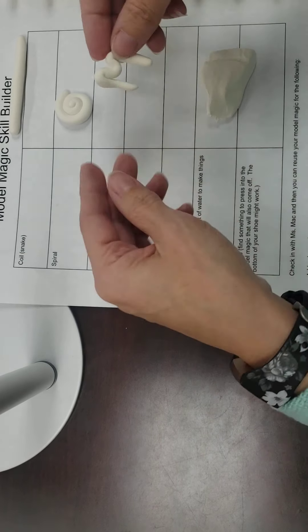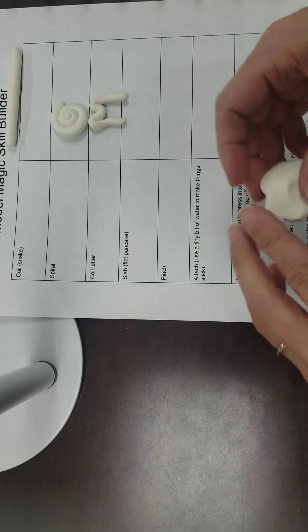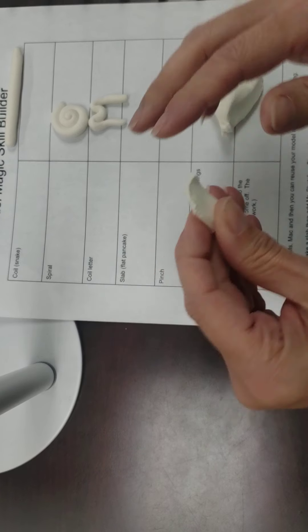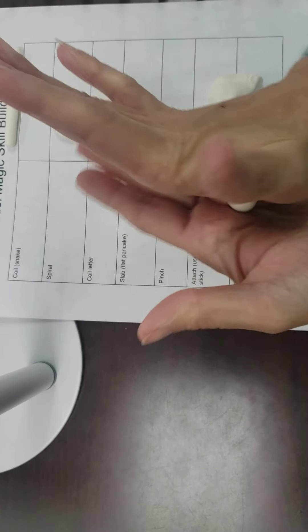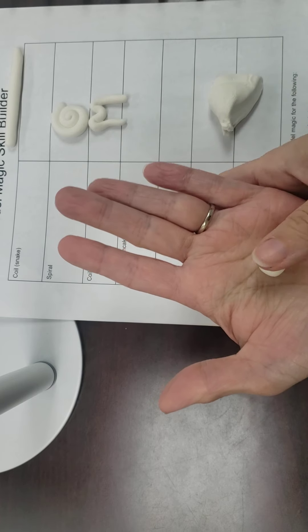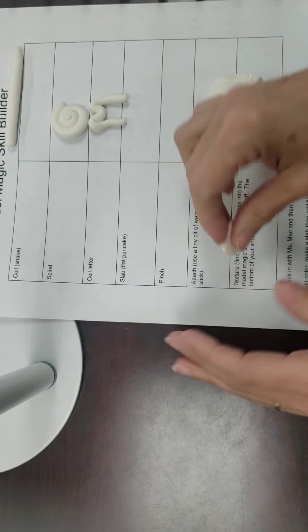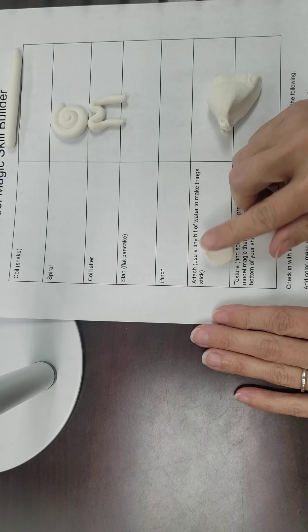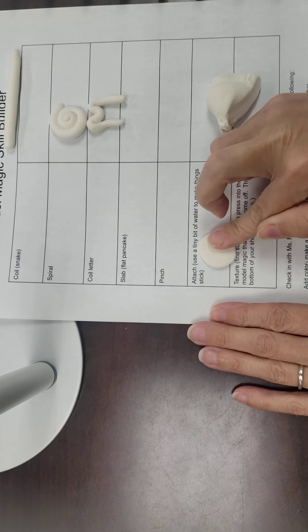Okay, a slab. A slab is a flat pancake of clay. Roll it in my palm and then I'm gonna press down right in my palm with my finger here. If it were a bigger chunk, I would flatten it with my whole hand, but I can just flatten it with my finger like this.